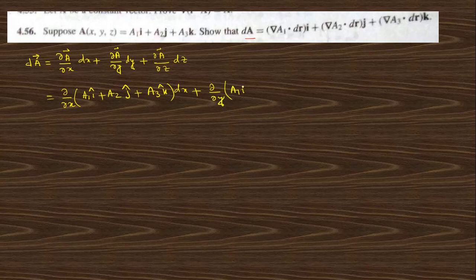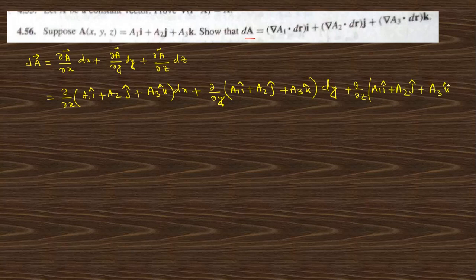We write dA vector as the total differential: dA = (∂A/∂x)dx + (∂A/∂y)dy + (∂A/∂z)dz, since A is a function of x, y, z. Then ∂A/∂x = (∂a₁/∂x)i + (∂a₂/∂x)j + (∂a₃/∂x)k, multiplied by dx. Similarly for the y and z terms.